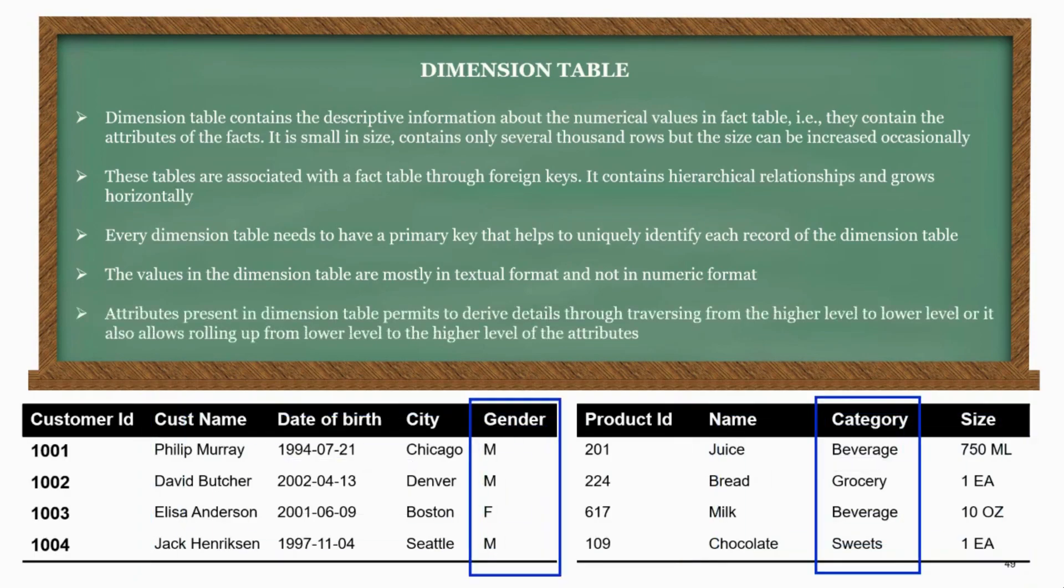Attributes present in dimension table permits to derive details through traversing from the higher level to lower level, or it also allows rolling up from lower level to the higher level of the attributes.